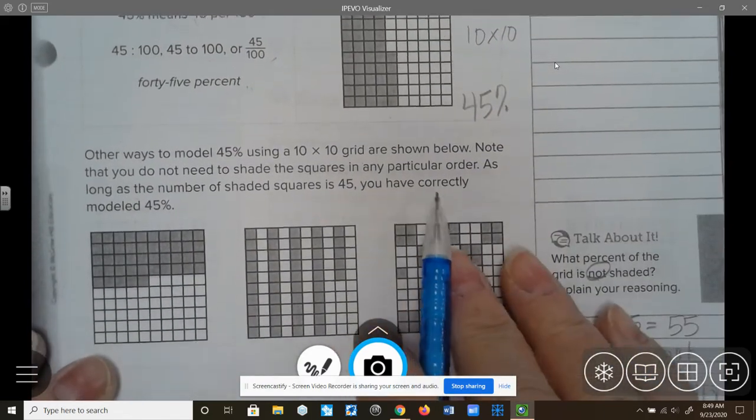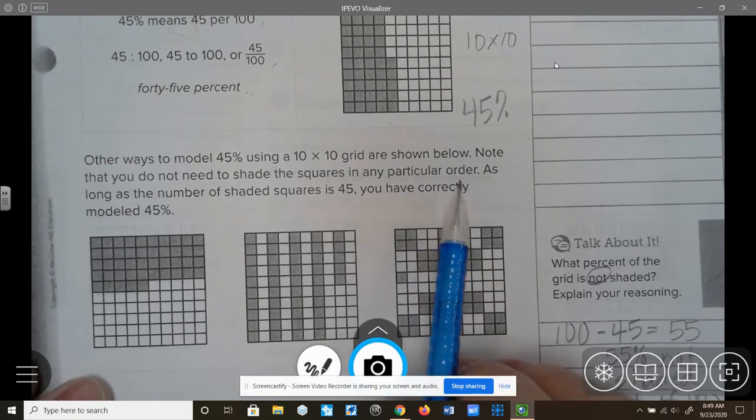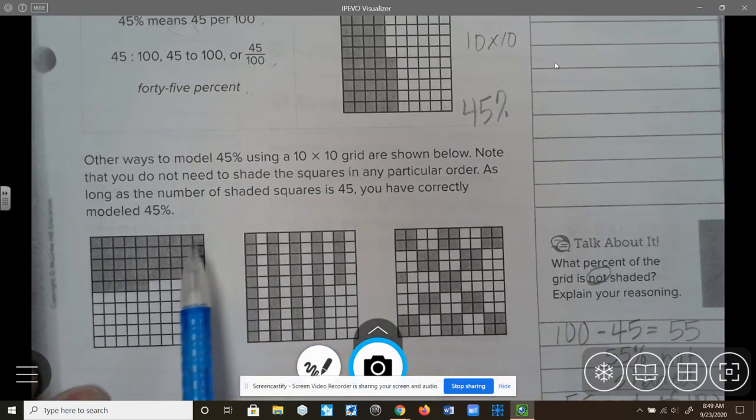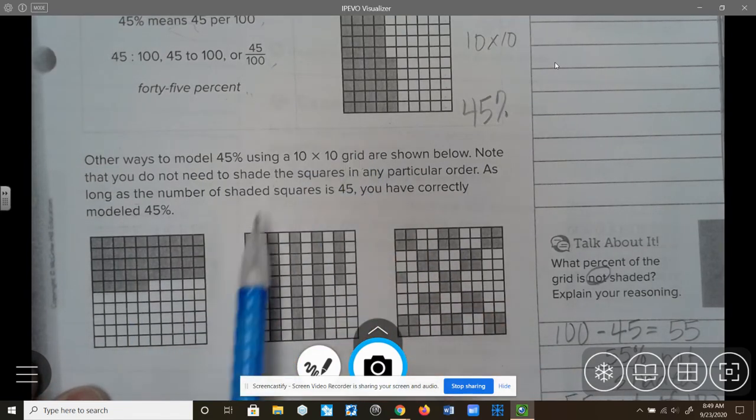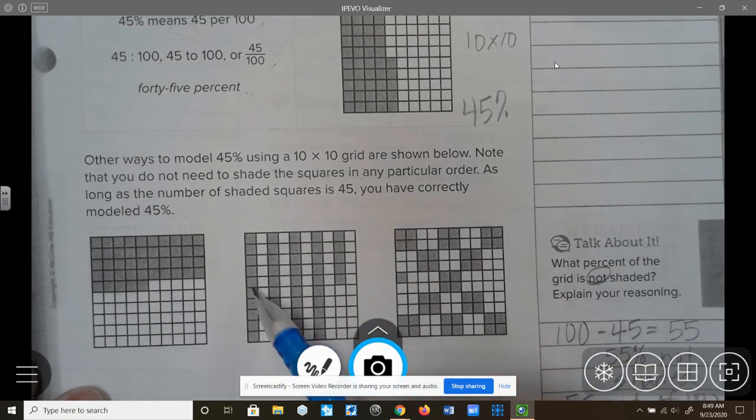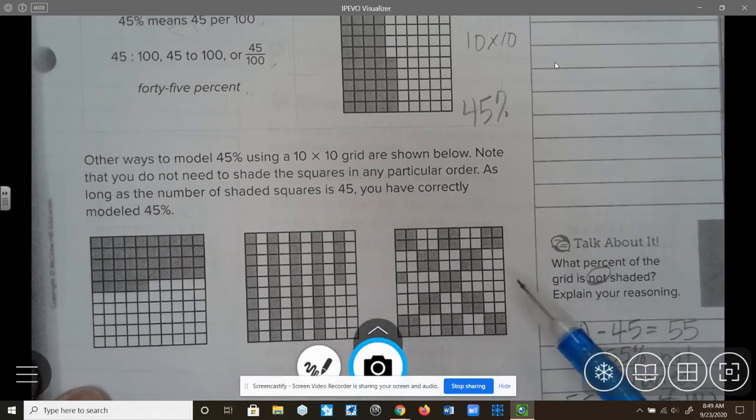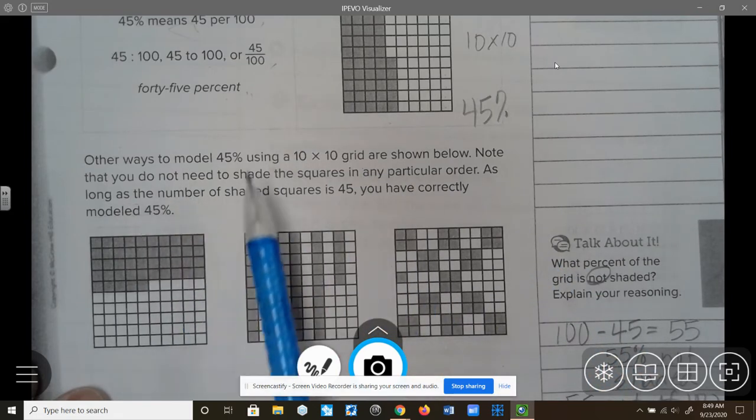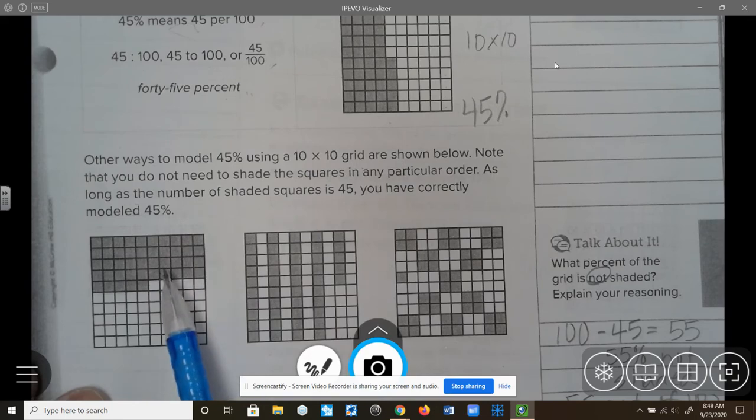Other ways to show the 45% using a grid is to make, instead of columns here, go ahead and make some rows and do 10, 20, 30, 40, and 5, 45%. You're still counting up the 10s and the 5, and then you can make a pattern. It makes it easier to count when it's in the columns and the rows, but these are also two other ways to show it.